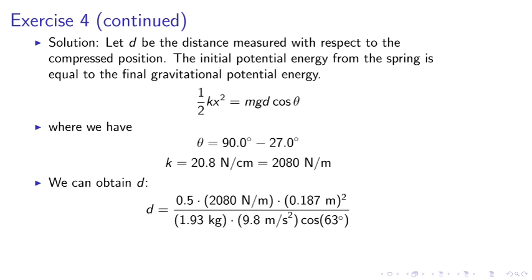We can subsequently obtain d from solving the above equations. This is half kx squared divided by m g cosine theta.